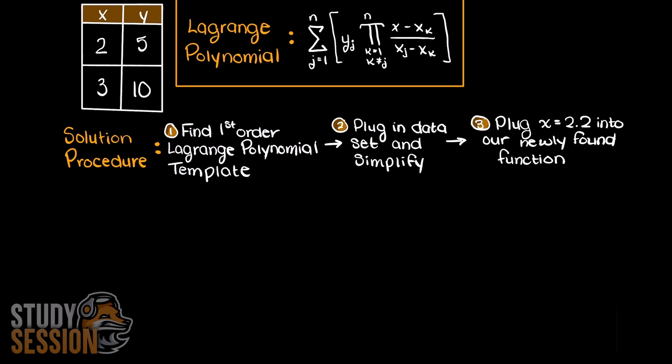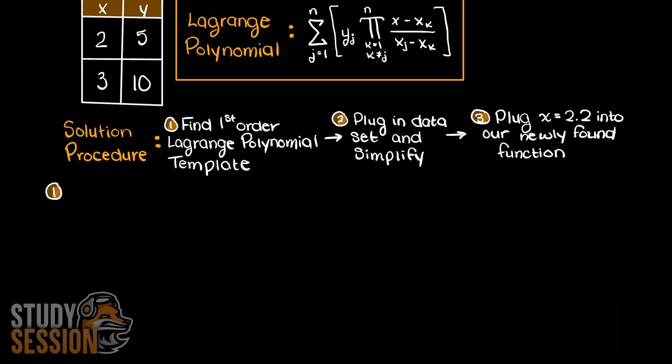Our first step is to develop our first order Lagrange polynomial equation. In brief, we know that we need one term for each data point we need our polynomial to pass through. I will go ahead now and rewrite our general first order Lagrange polynomial equation.